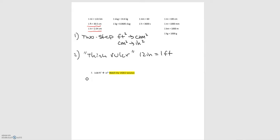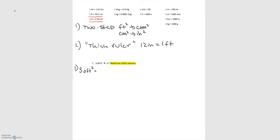Starting with approach one, we have 3 feet squared. We'll make use of the conversion factor one foot equals 30.5 centimeters. Since we have feet squared on top, we want feet on the bottom, so we divide by one foot. That leaves us with 30.5 centimeters divided by one foot.